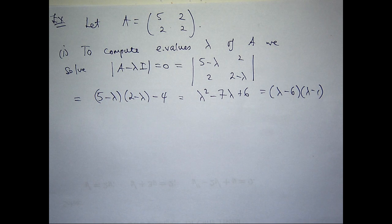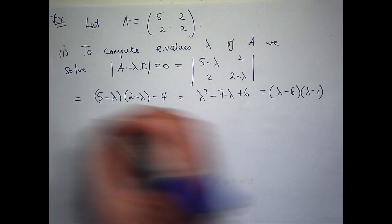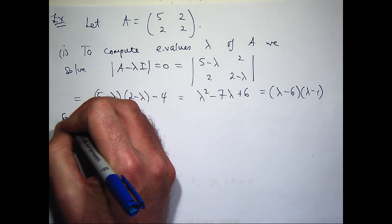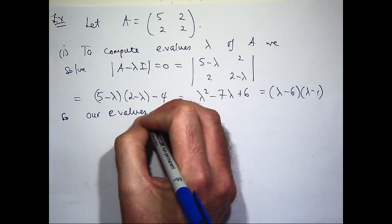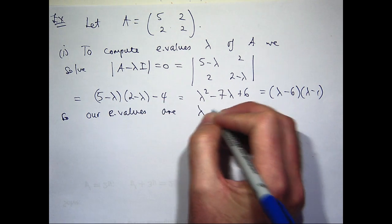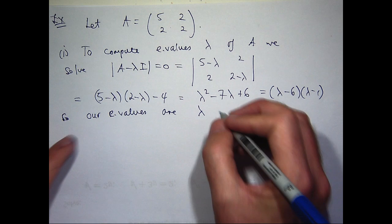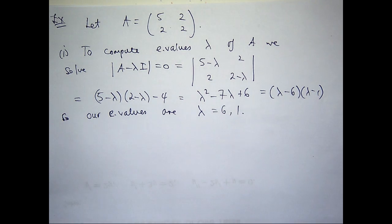So hopefully you can see that there's going to be two eigenvalues. So lambda equals six, lambda equals one. And they're distinct. Let's say six and one.